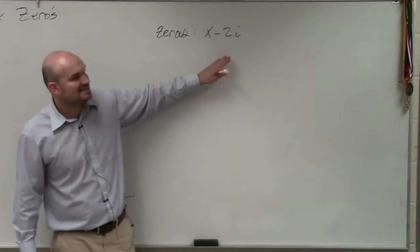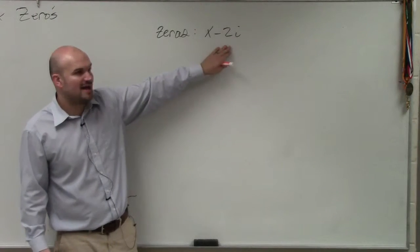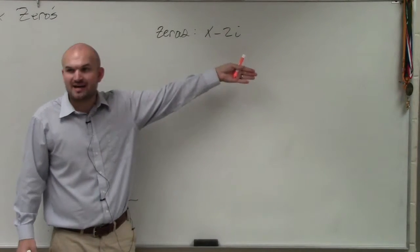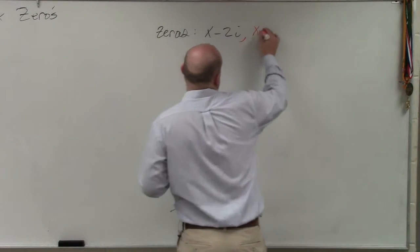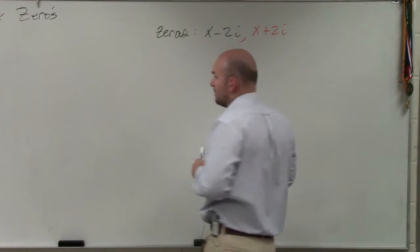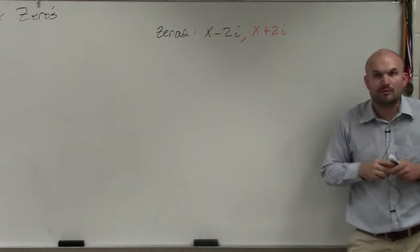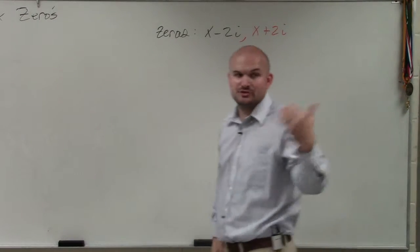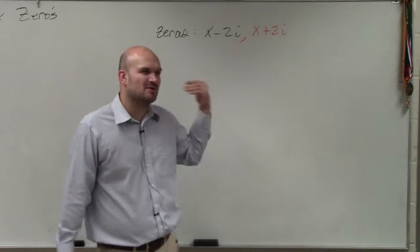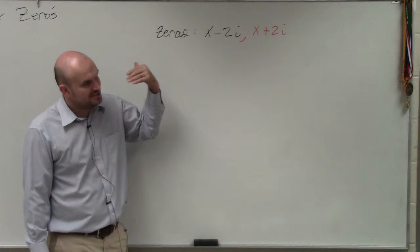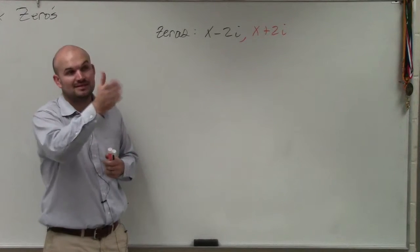So the nice thing about complex zeros is if you have one, you know you have the conjugate pair. So the conjugate pair in this example is going to be x plus 2i. Now, one thing I'm looking for in your homework is making sure you guys are doing these types of problems. It's really not more difficult, but it does just kind of carry a little bit of extra steps.